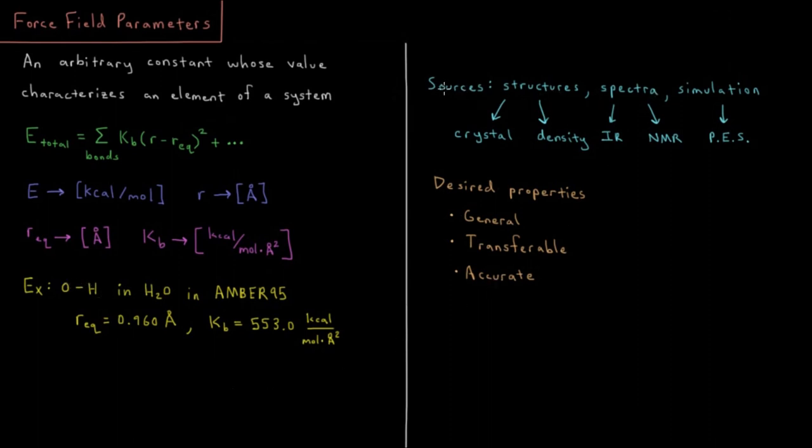So where do we get these parameters from? How do we choose them? There are several different strategies you could use depending on your goal applications. You might look at various structures, either crystal structures of proteins, crystals, etc. Maybe you'll look at electron density maps or other kinds of things. Maybe you're trying to reproduce the density of water to choose this bond length.